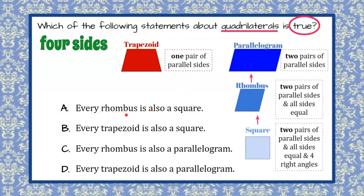In part A, every rhombus is also a square. So we have rhombus here. It doesn't go this way, but it can be a parallelogram, but a rhombus is not necessarily a square. So not every rhombus, some squares are, all squares are rhombuses, but not all rhombuses are squares. So we're going to rule out choice A.